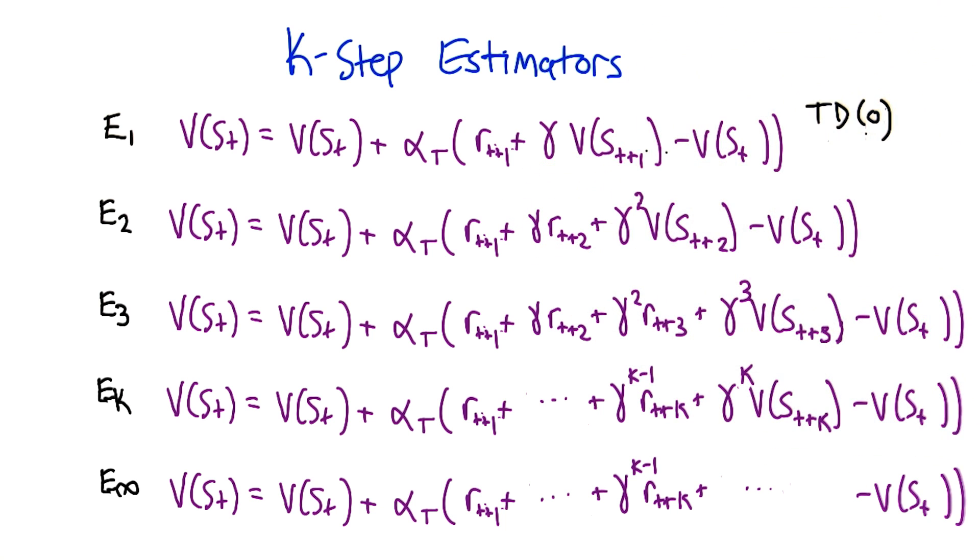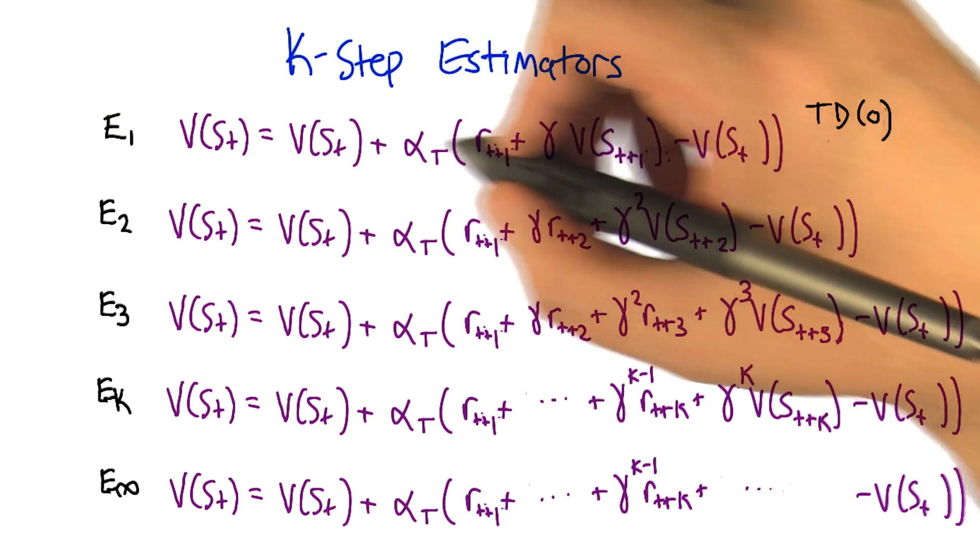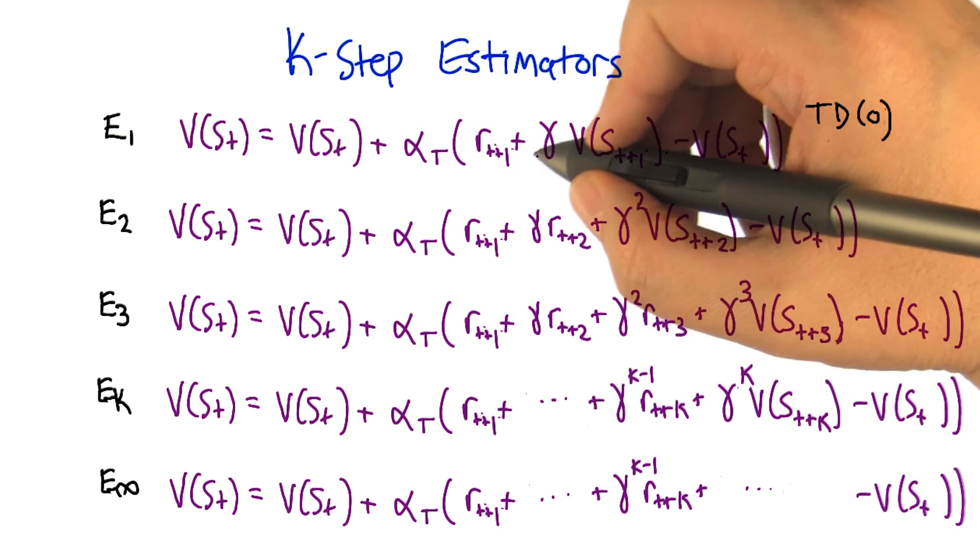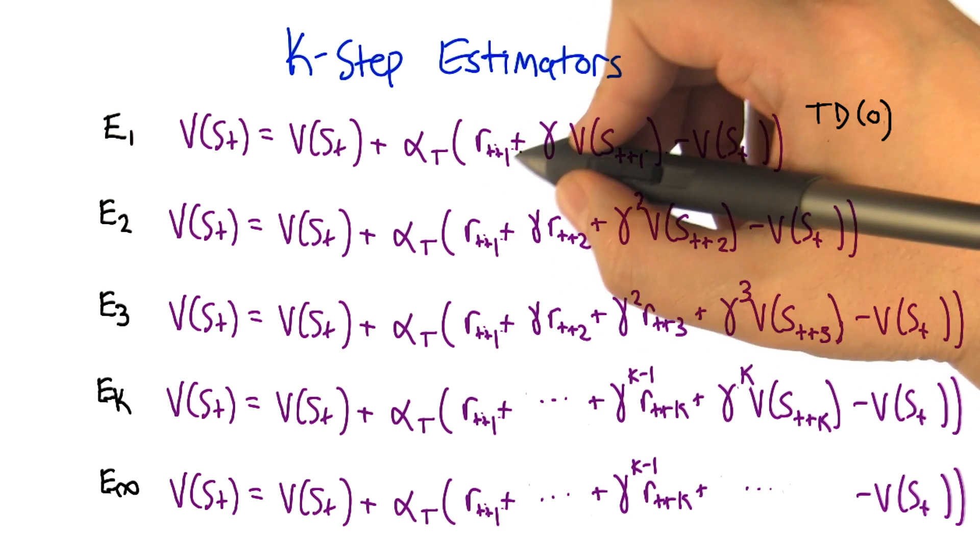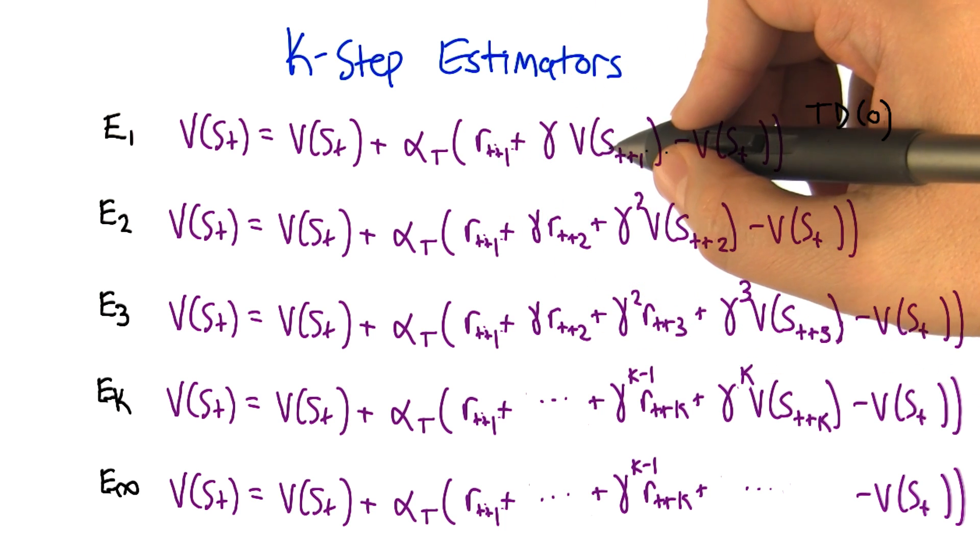Oh right, yes, yes, that makes sense. And in fact, you're exactly right that the way to think about that is a one step estimator, right? So it's a one step estimator in that we use the immediate reward that we got plus the value of the state that we land in.